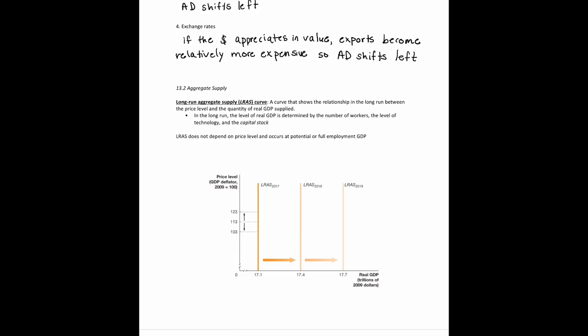Now that we've talked about aggregate demand, let's talk about aggregate supply. Aggregate supply refers to the quantity of goods and services that firms are willing and able to supply. We're going to look at two aggregate supply curves: the long-run aggregate supply curve (LRAS) and the short-run aggregate supply curve (SRAS). In the long run, the level of real GDP is determined by the number of workers, the level of technology, and the capital stock. LRAS does not actually depend on price, which is why the long-run aggregate supply curve is a vertical line.